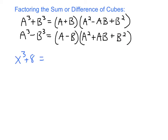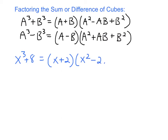For the example x cubed plus 8: x cubed is the cube of x, and 8 is the cube of 2, and they're added, so it's a sum of two perfect cubes. Using the sum of cubes formula, the first factor is (x + 2), and the trinomial is x squared minus 2x plus 4.